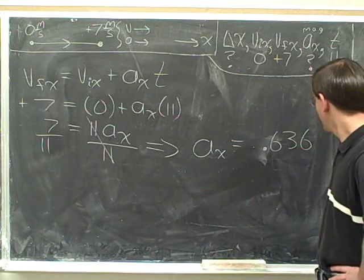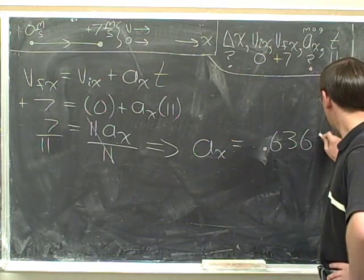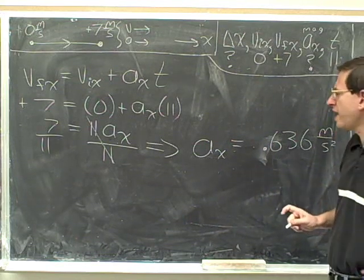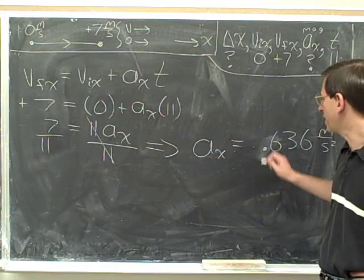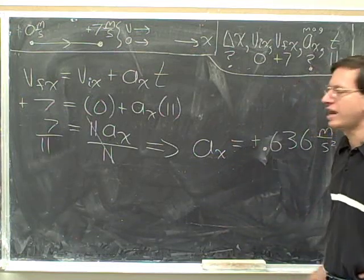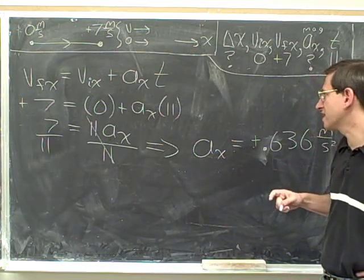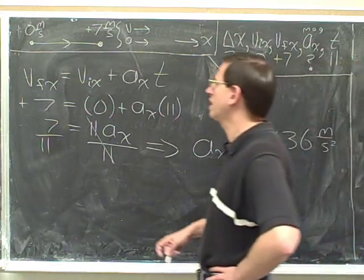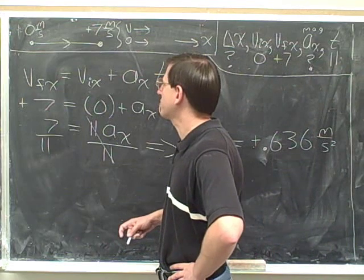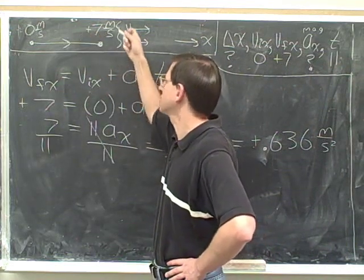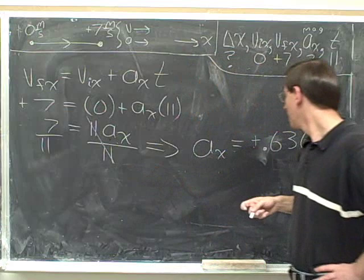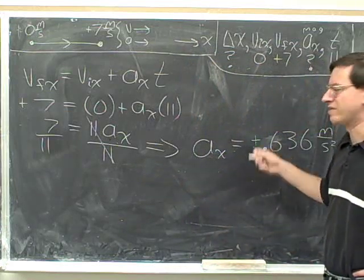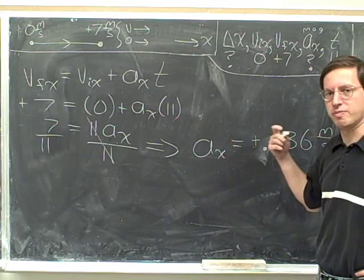OK. So here's our acceleration. Now, this should be in units of meters per second squared. Now, mathematically, did this come out positive or negative? Well, mathematically, it came out positive. Let's put in that sign. Now, we should always check whether the sign makes sense. Were we expecting the acceleration to come out positive? Well, we chose our positive direction so that the velocity was positive and the acceleration is in the same direction as the velocity. So, yeah, the acceleration had better come out positive. If the acceleration had come out negative, we would have known we made a mistake.